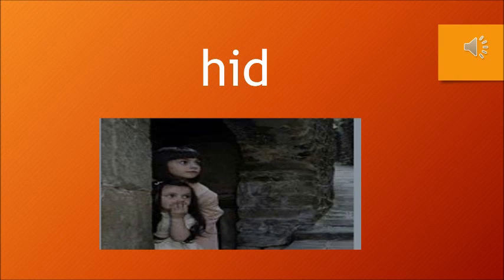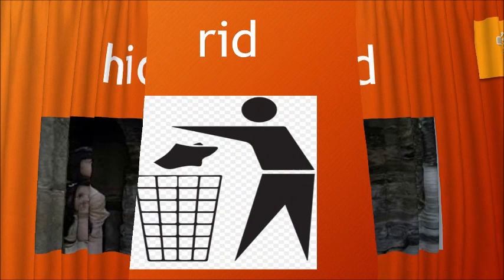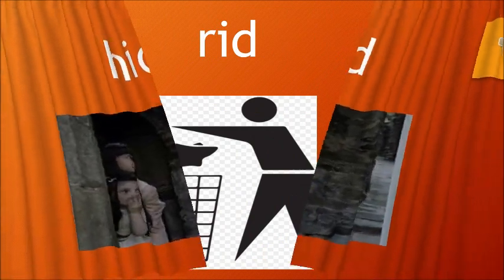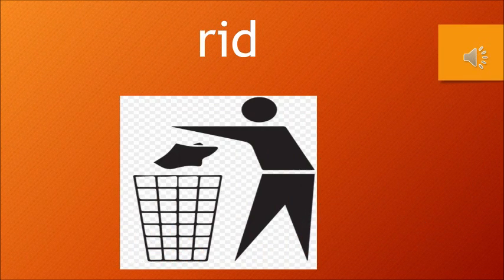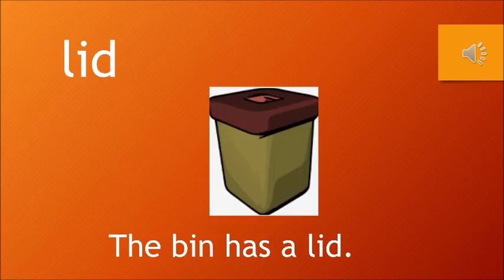Now the next one is rid. Rid means to throw away — we throw away the trash. R and id: rid. Can you see this picture? This particular person is throwing away all the rubbish, all the trash. So the words with 'id' we have learnt so far are: lid, kid, hid, and rid. Now we will see a few sentences with these words.